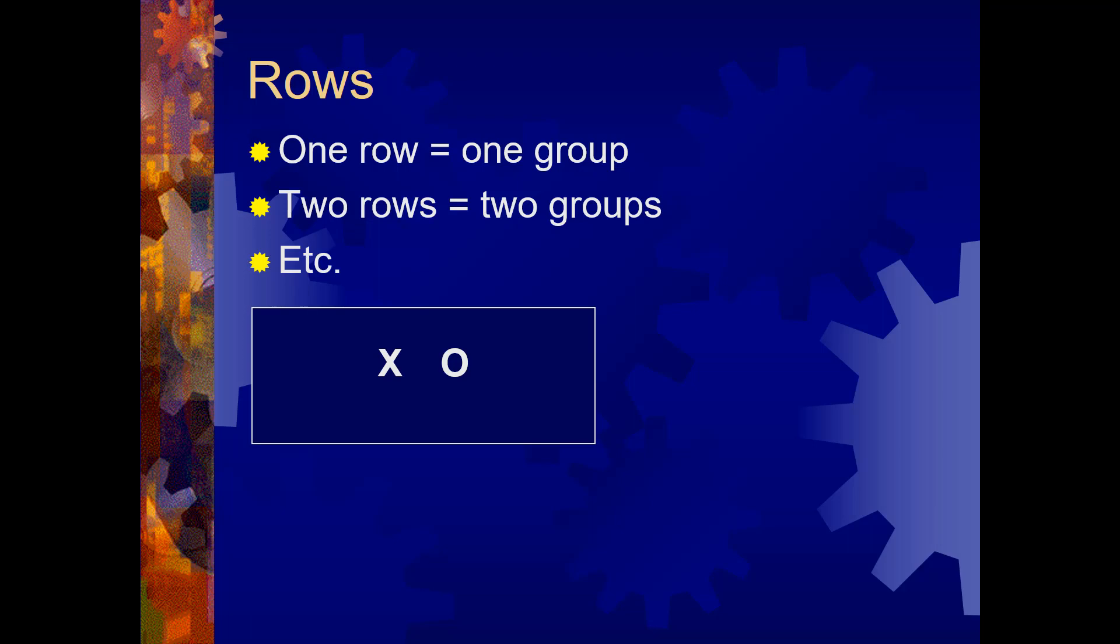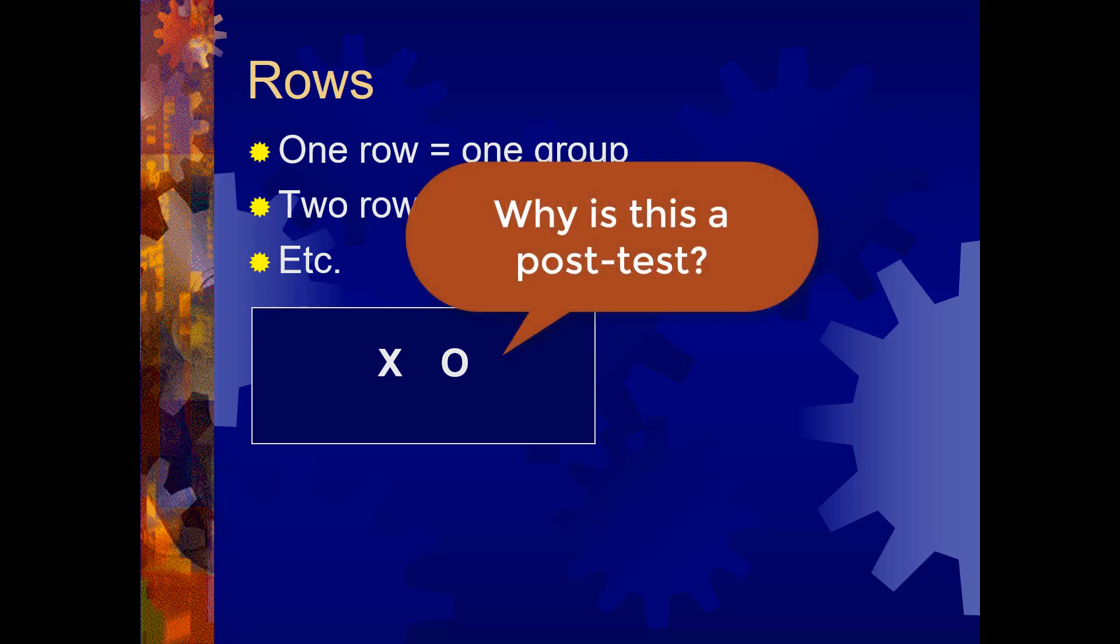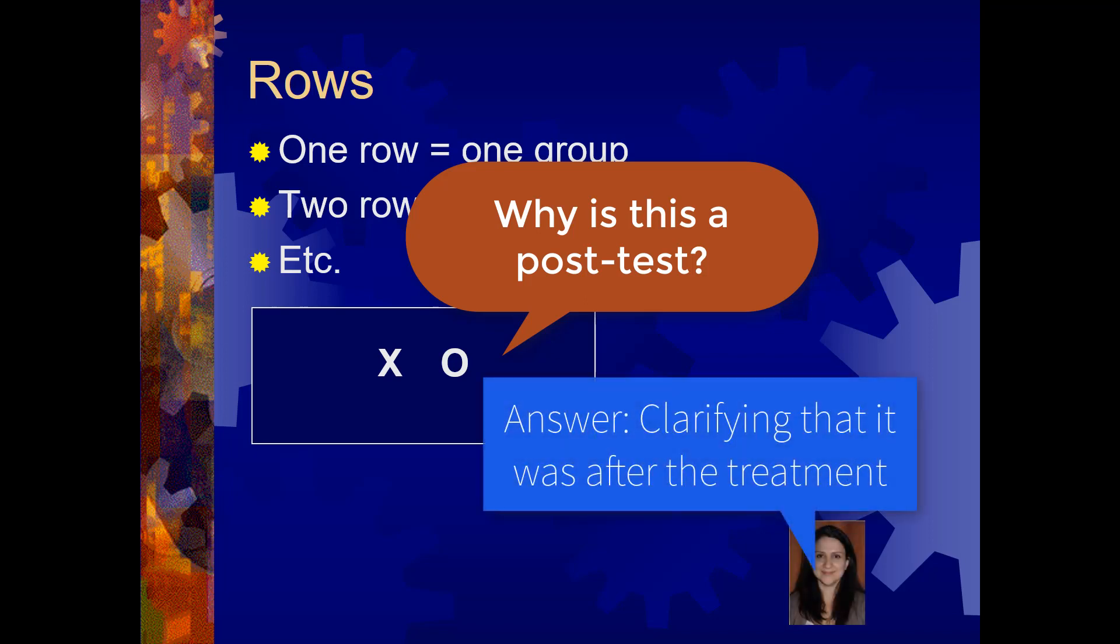In this case we have one group of people. They all receive some sort of intervention or program, and then there is a post-test taken, an observation of some kind leading to the data post the intervention. Now you may be asking yourselves, well why are you calling it a post instead of just an observation? Because there's no pre-test in this case. The idea here is just to learn the terminology, and in this case we're sort of thinking about post the treatment, even if there wasn't anything pre the treatment.